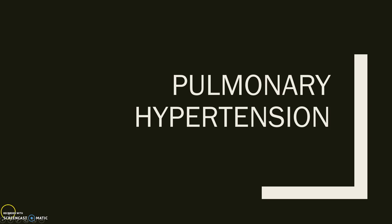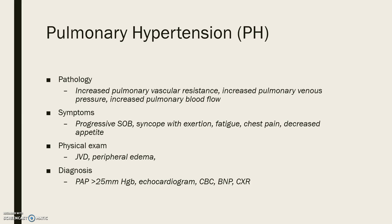Pulmonary hypertension is characterized by increased pulmonary vascular resistance, increased pulmonary pressure — such as from left ventricular failure — and increased pulmonary blood flow with a left-to-right shunt.